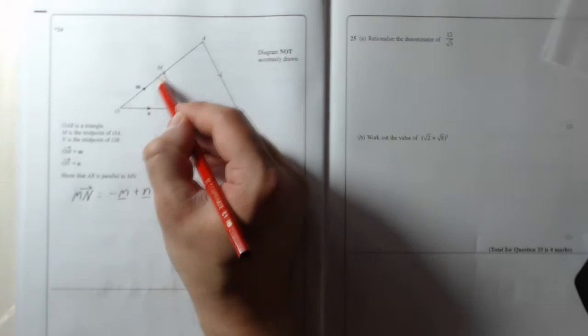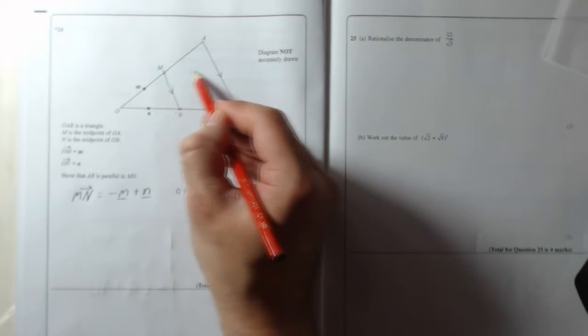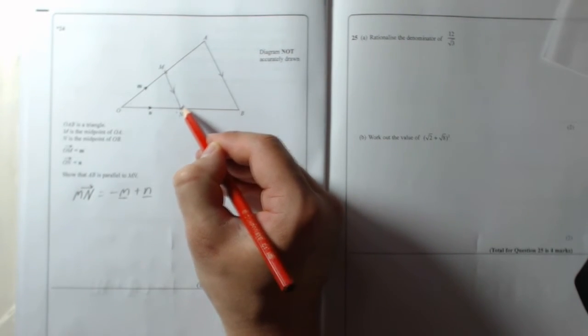It doesn't matter which way around you go, minus M plus N or N minus M works the same way. Minus M plus N, if you look at it like this, plus N, minus M, you end up in the same spot, so it doesn't matter which one you do. So now we're going to work out AB.